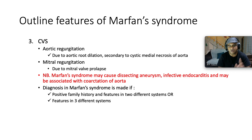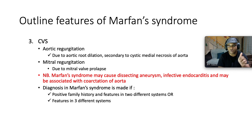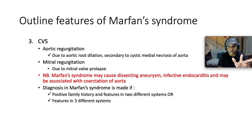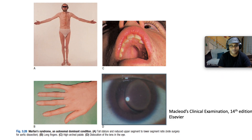The diagnosis in Marfan syndrome can be made if you have a positive family history and features in two of the different systems mentioned — the eye, the skeletal, or the cardiovascular — or features in all three systems without the family history.